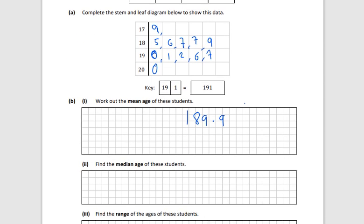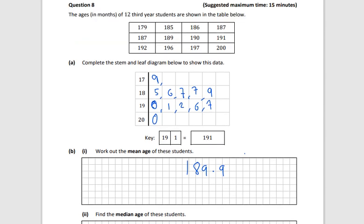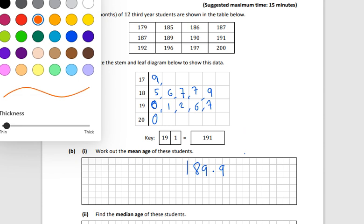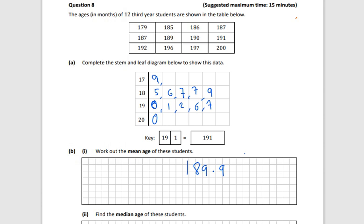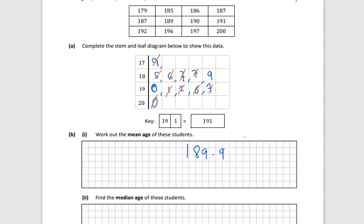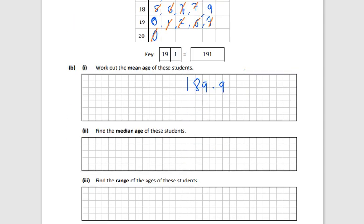Next one is median age. You can write them all out in order there if you want and then look for the middle one. Or we can go to the diagram and just cross them off in that because they're in order. So that one, that one, the next smallest, next biggest, next smallest, next biggest, next smallest, next biggest. And now I've crossed off the same amount on both sides. But we have 189 and 190 there. So we have 2 in the middle. So we're going to add them together and divide by 2. And that would give me 189.5. Or 189 and a half.